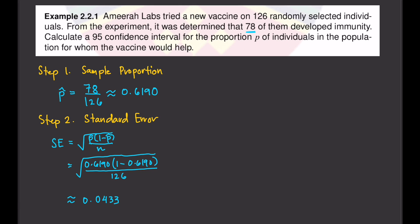Step 3 is to identify the associated Z-score for the 95% confidence interval. Just look at the table — the Z-score for the 95% confidence interval is 1.96.